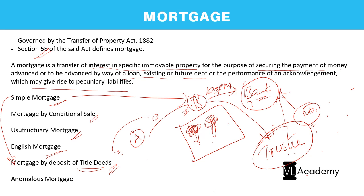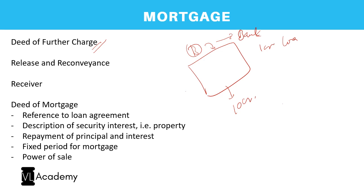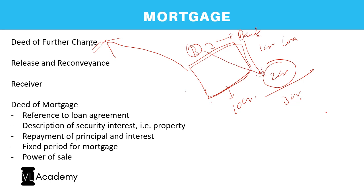An anomalous mortgage is a combination of any of the above types. A deed of further charge arises when a borrower wants additional loan against the same already-mortgaged property. For example, if B got ₹1 crore initially and later wants ₹2 crore more, the bank takes a further charge over the same property—total ₹3 crore on that property—and the deed documenting this is called a deed of further charge.